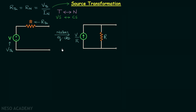Whenever we have a voltage source connected in series with a resistance, we can replace this configuration with one in which we have a current source connected in parallel with the same resistance. The value of the current source equals the voltage divided by the resistance from the initial configuration.